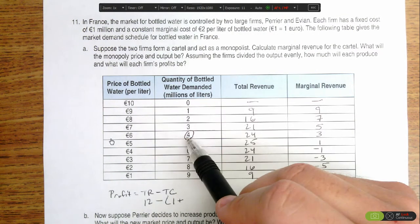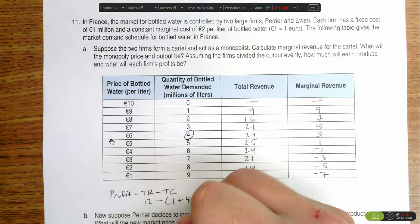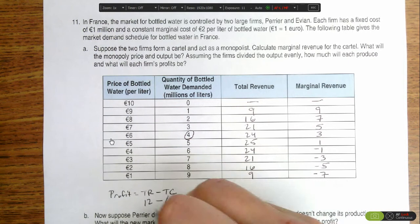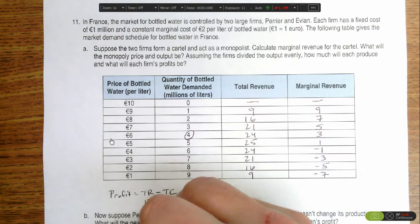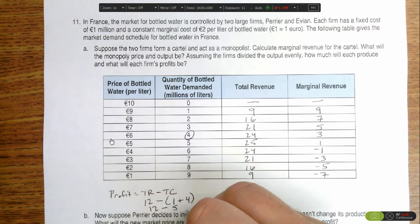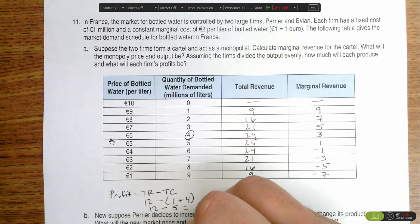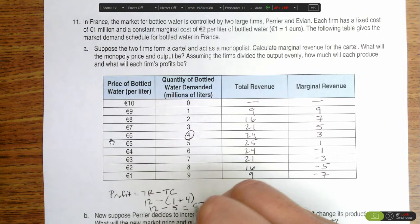They're making 2 million bottles, so their variable cost is 4 million. Their profit is 12 million minus 5 million in total cost, which means they're going to make 7 million euros in profit.